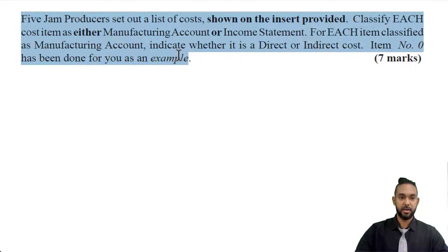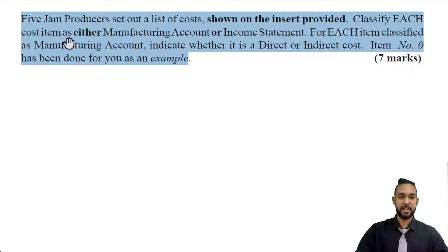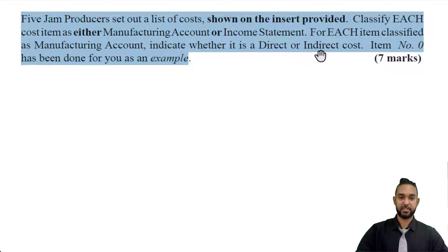Let's take a read of the first item. Five jam producers set out a list of costs shown on the insert provided. Classify each cost as either manufacturing account or income statement. For each item classified as manufacturing account, indicate whether it is a direct or indirect cost. Item number zero has been done for you as an example.